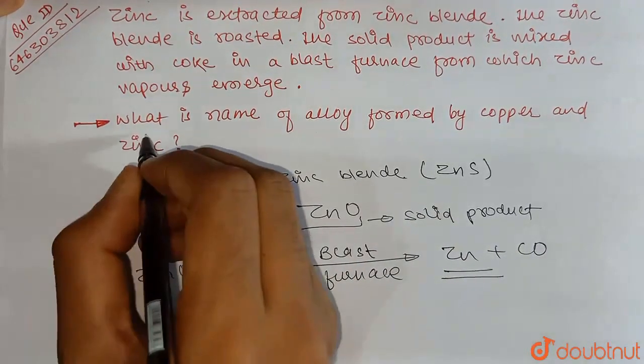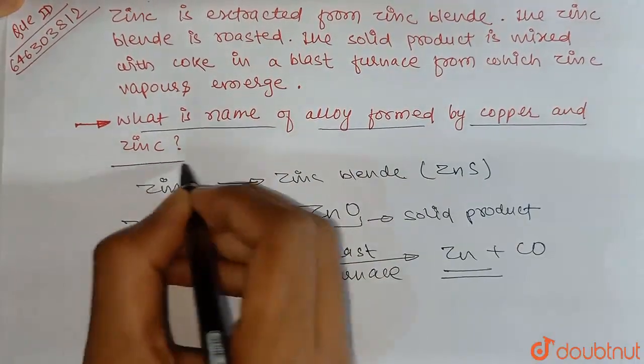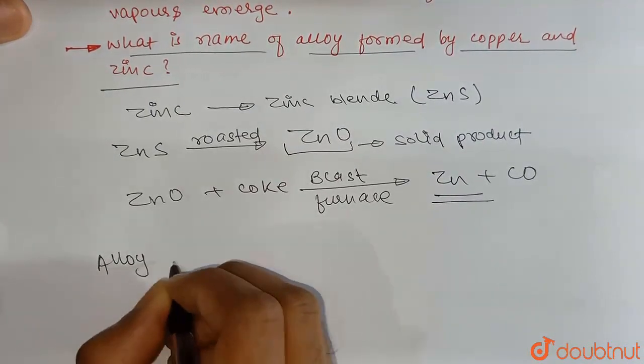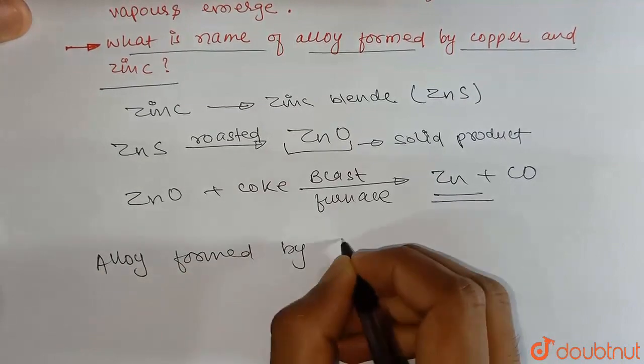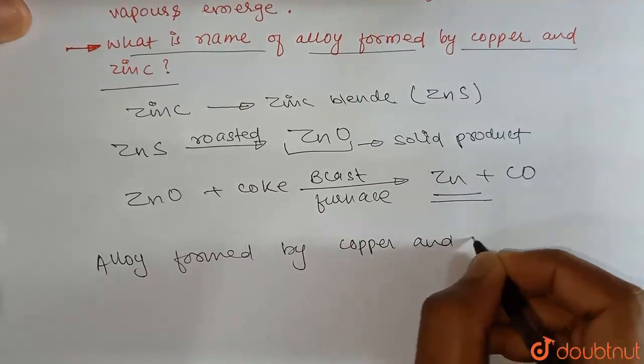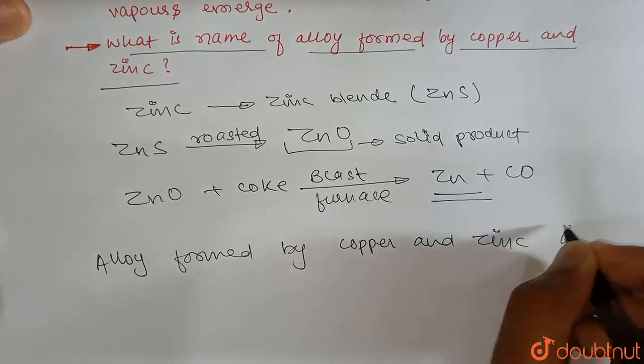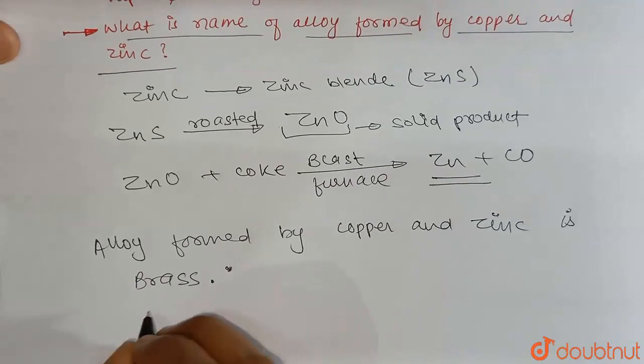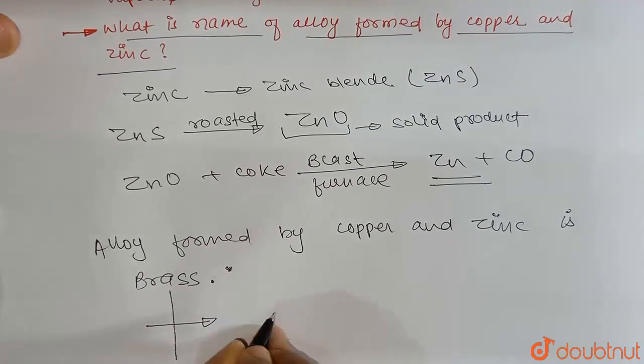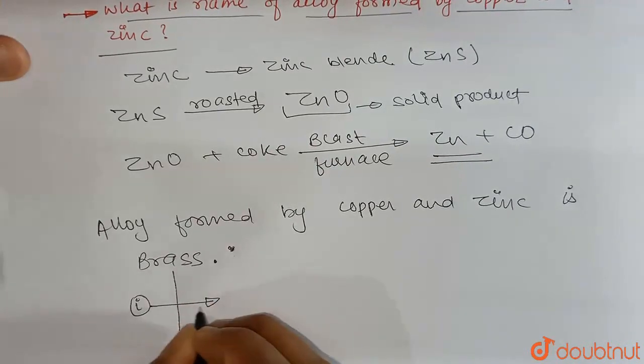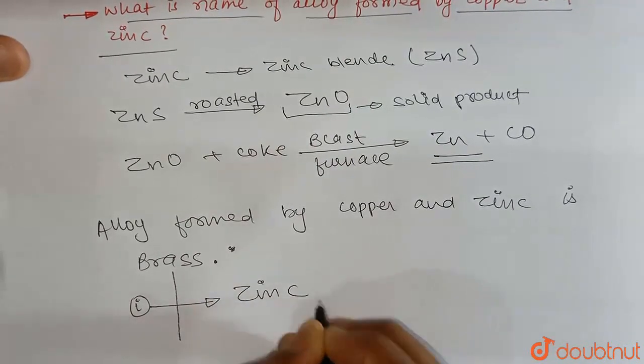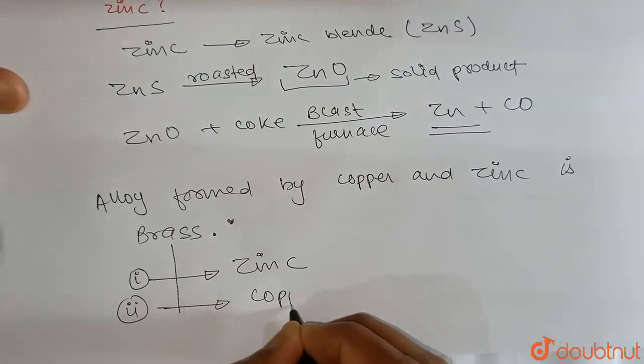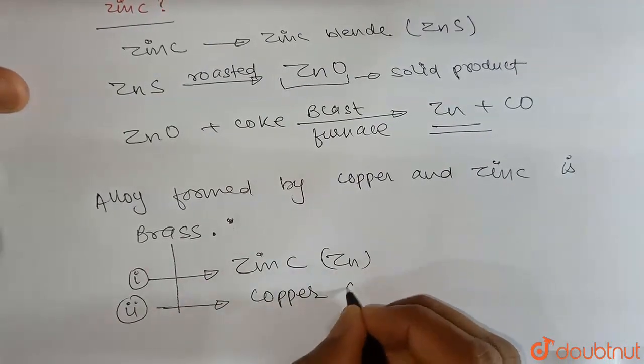So what is the name of the alloy formed by copper and zinc? Alloy formed by copper and zinc is brass. Brass is basically an alloy of copper and zinc. If we talk about composition, brass contains first zinc and second copper.